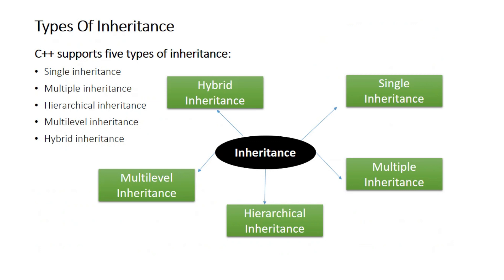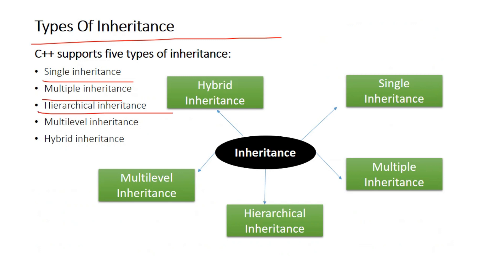Types of inheritance — how many types are there? C++ supports 5 types of inheritance: single inheritance, multiple inheritance, hierarchical inheritance, multilevel inheritance, and hybrid inheritance.